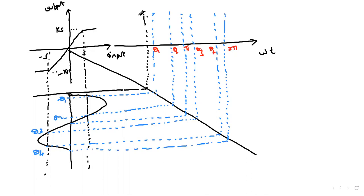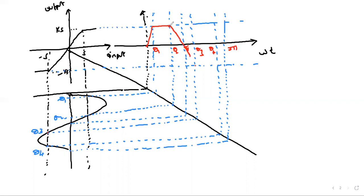From 0 to theta1 both signals are increasing and a linear relationship exists. From theta1 to theta2 the signal remains constant at the saturation level. Then it starts decreasing at theta2 all the way to theta3, followed by a sudden fall. It then remains constant up to theta4, and then starts increasing up to 2π. This becomes the periodic signal which is a description of our non-linearity — saturation.